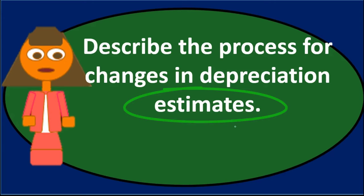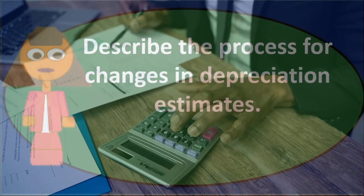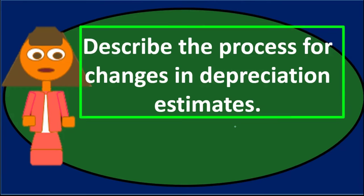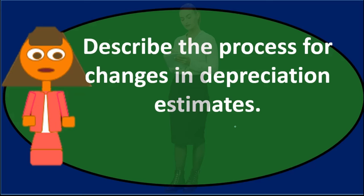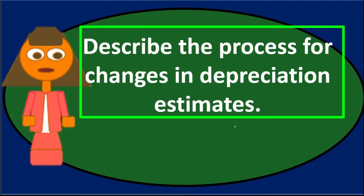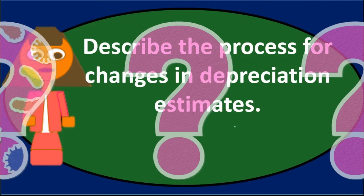The things that can change in our estimate - typically it's not the cost. The cost is what it is, what we paid for it. What could change is the estimated life of the equipment. After a few years, we might say our estimate on how long this will last is way off and should change. Or the salvage value - how much we think it will be worth at the end of its useful life. One or both could change, significantly changing our estimate. What do we do if that happens?